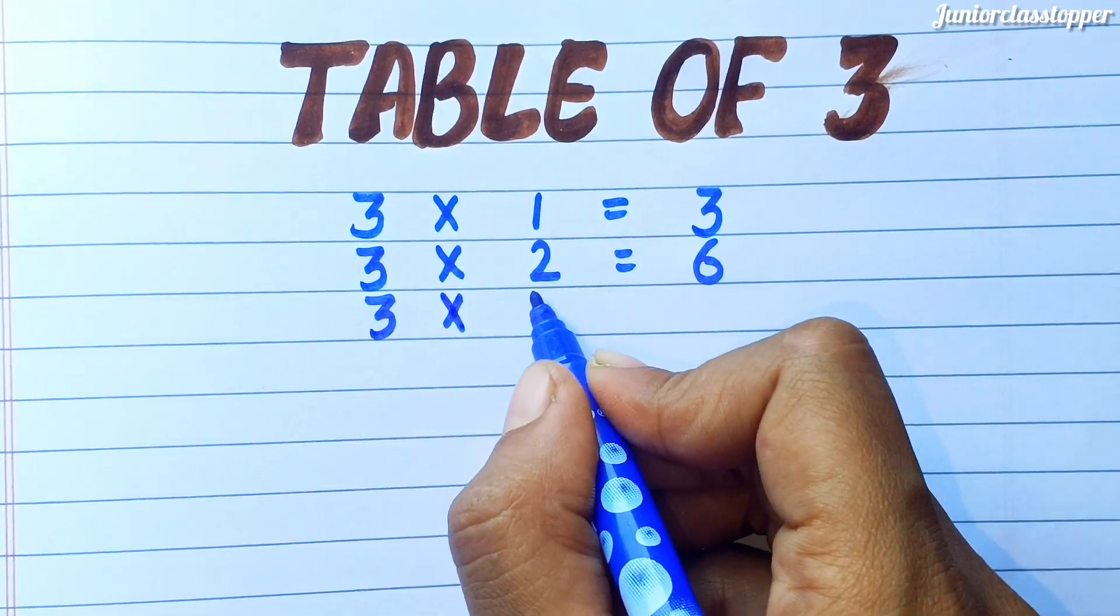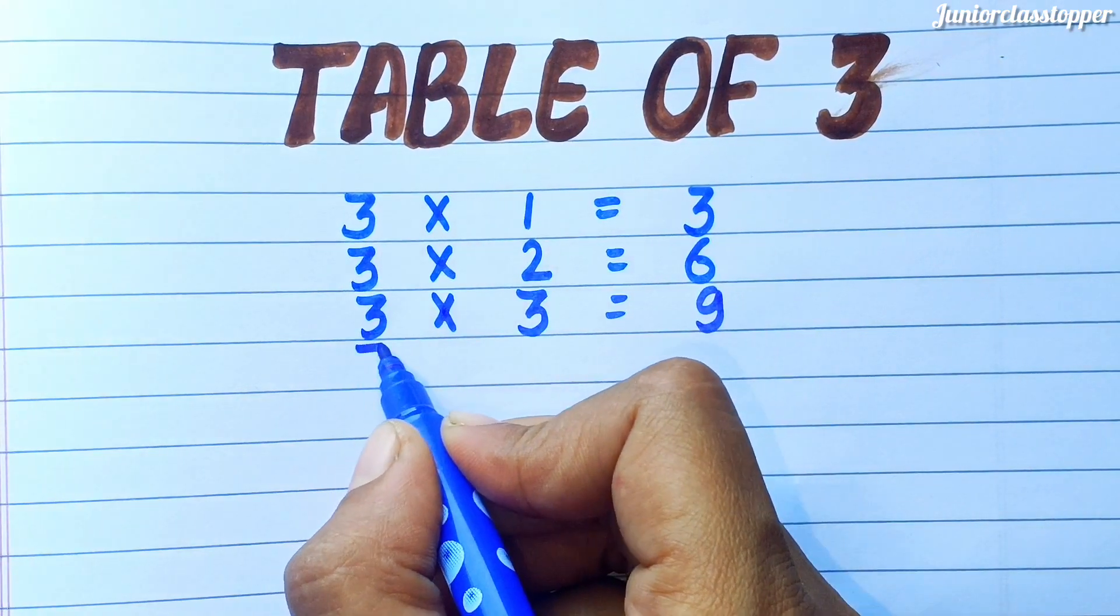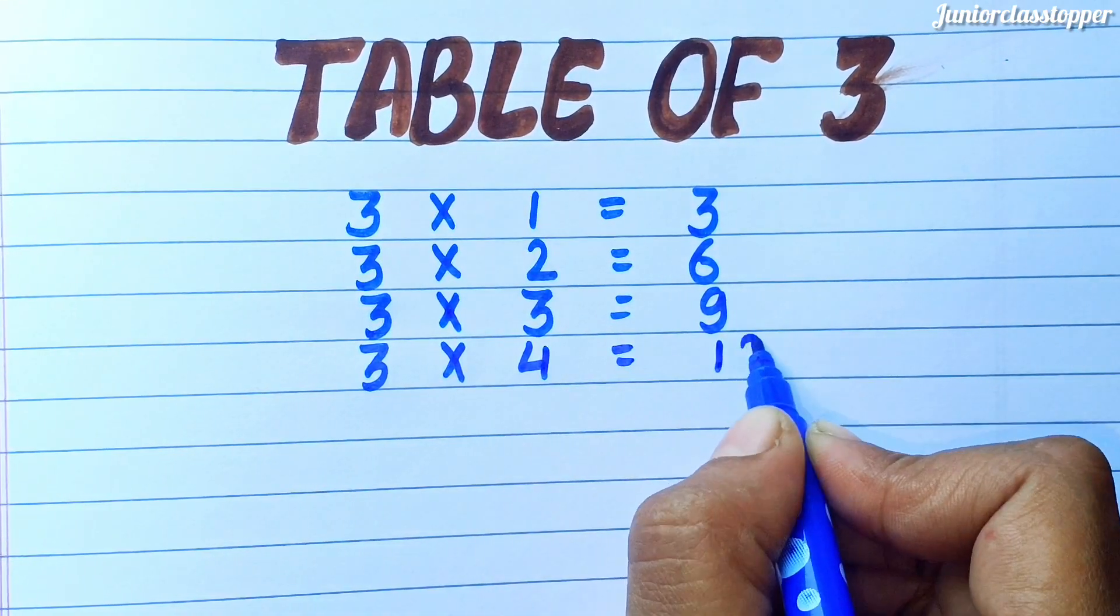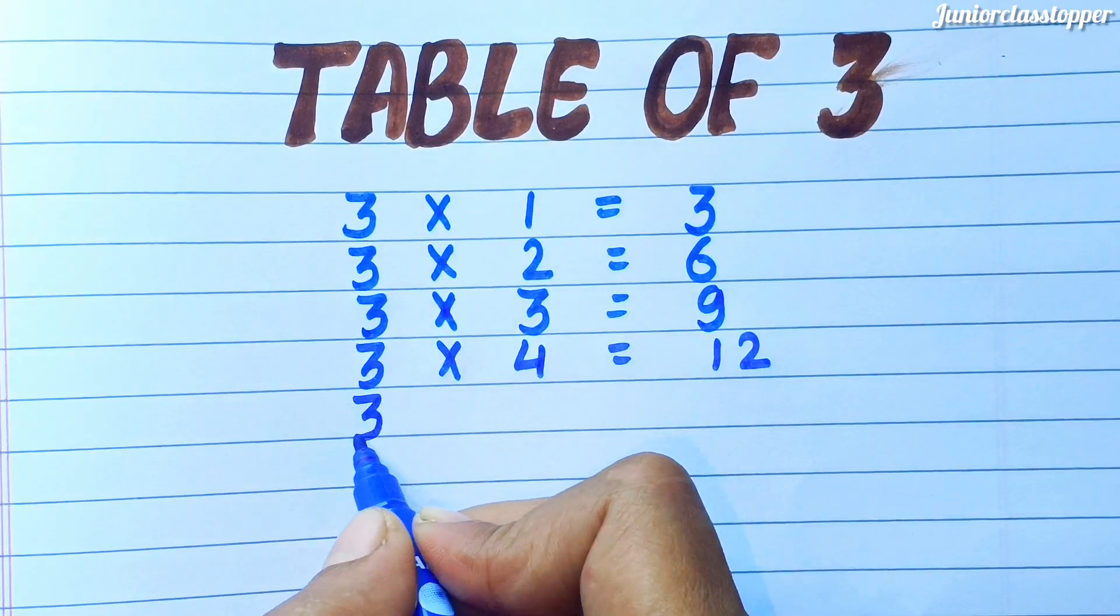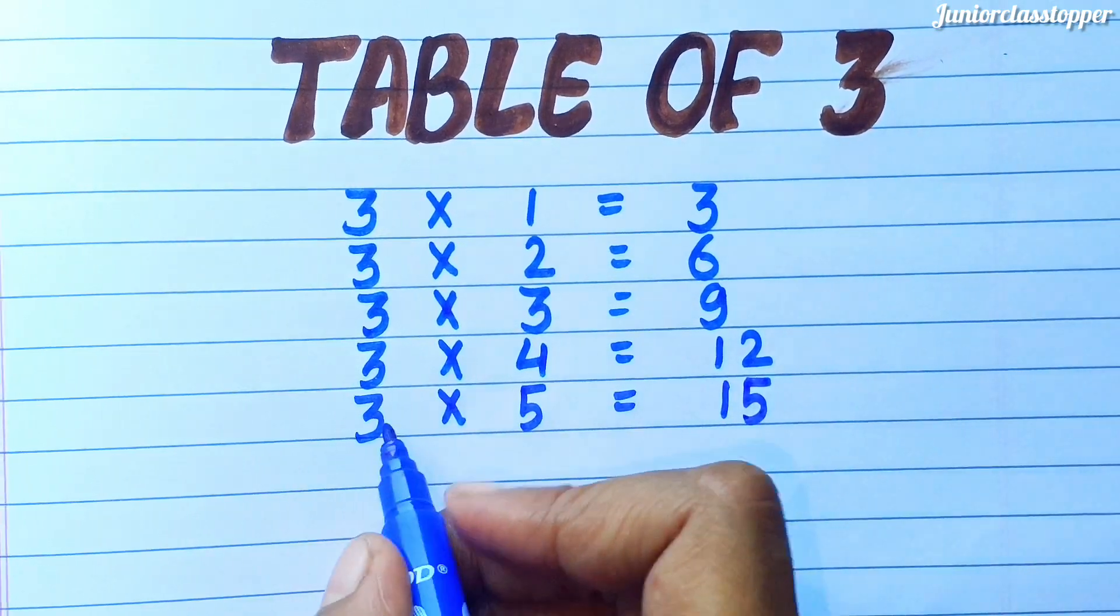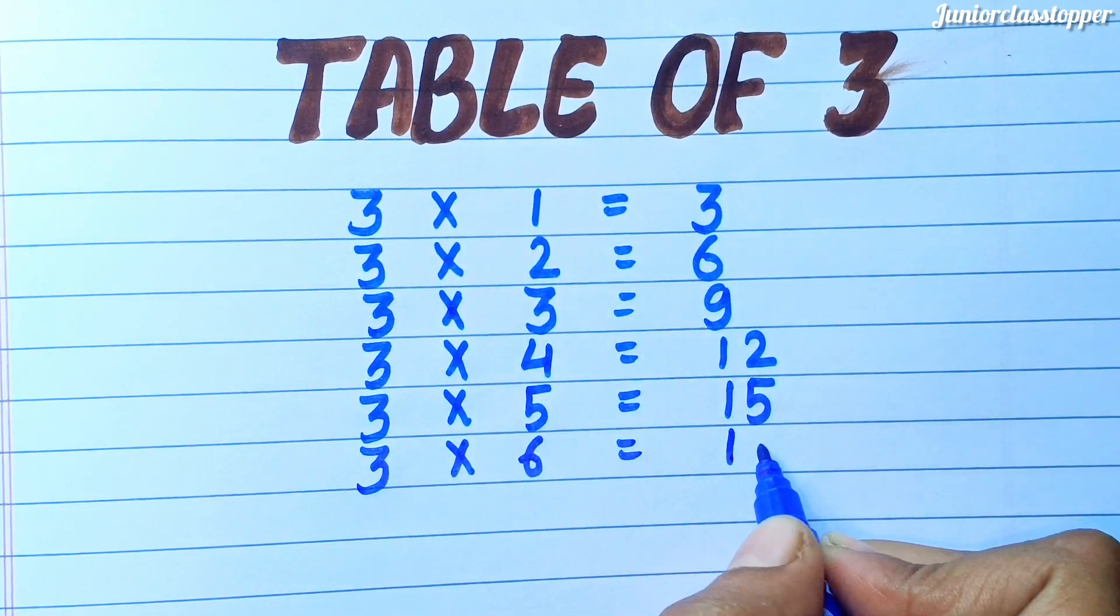Three threes are nine. Three fours are twelve, Three fives are fifteen, Three sixes are eighteen.